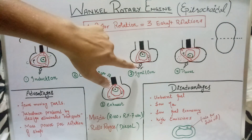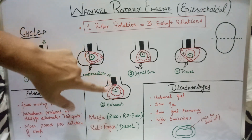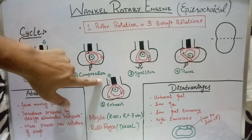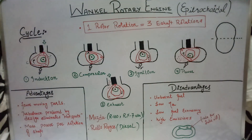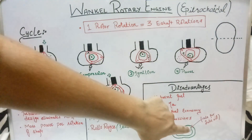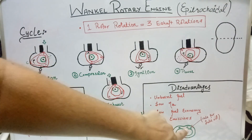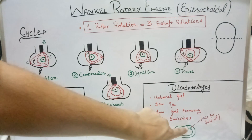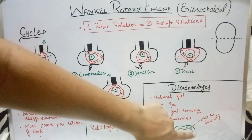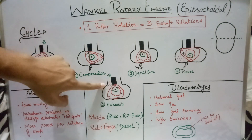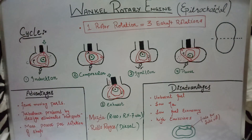Moving towards the disadvantages: there will be unburnt fuel due to poor ignition timing. Similar to a conventional two-stroke engine, it has low thermal efficiency, less fuel economy, and very high emissions. One reason for high emissions is its lubrication system — similar to a conventional two-stroke system, there is a hole beside the intake port through which lube oil is introduced into the engine and burns with the air-fuel mixture, producing high emissions.